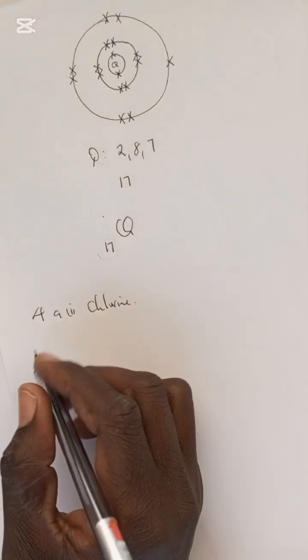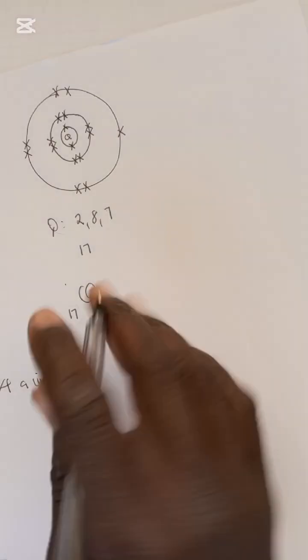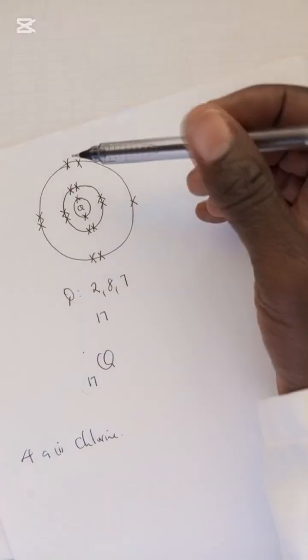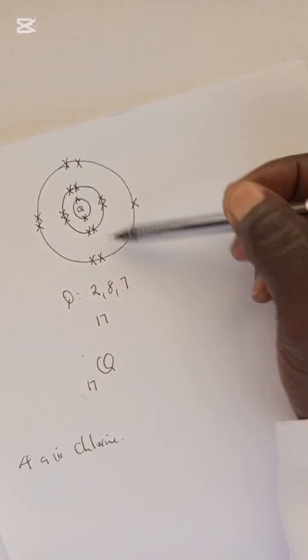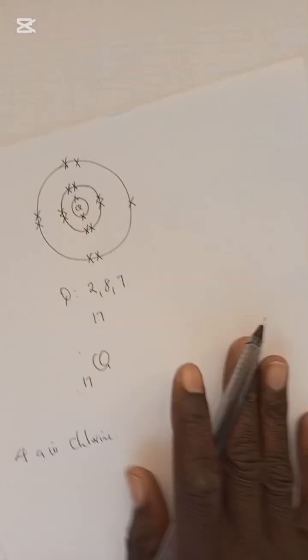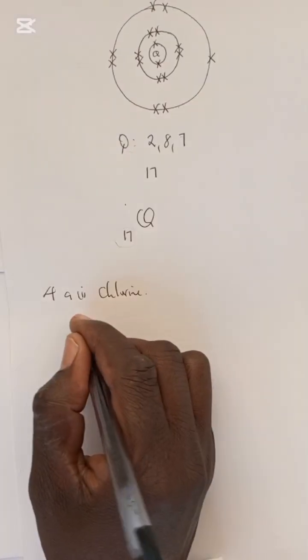We go to Roman numeral two, which says: state the period of the periodic table where element Q belongs. So the period is - how do you know the period? You count the number of shells: first shell, second shell, third shell. One, two, three. Three shells, so the period is period three.